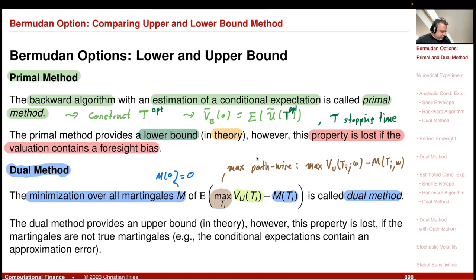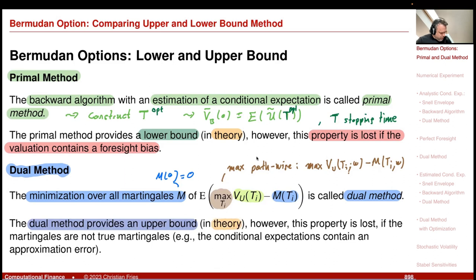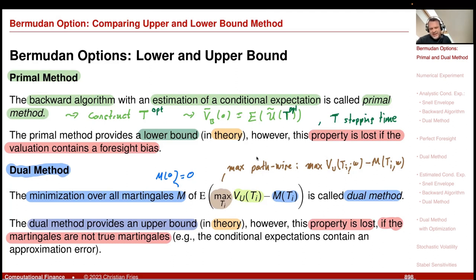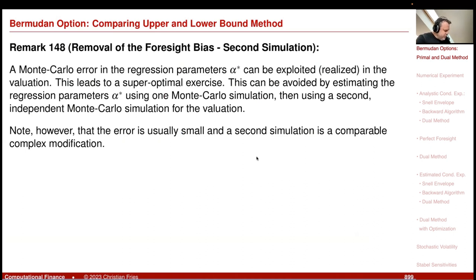The dual method provides us, in theory, with an upper bound, because if you take any martingale that is not the minimizing one, you get an upper bound. However, this is also only in theory, as we will see in a small numerical experiment. This property is also lost if the martingales we use are not true martingales — for example, if we use some numerical approximation of the conditional expectation that has a defect, this defect destroys the martingale property. And this aspect is actually quite strong.